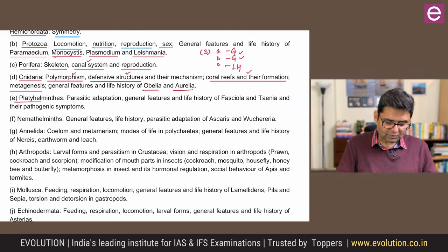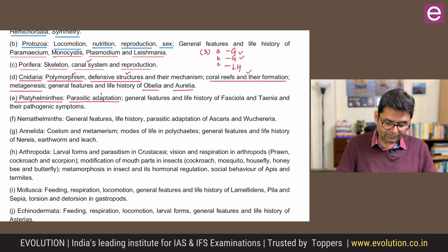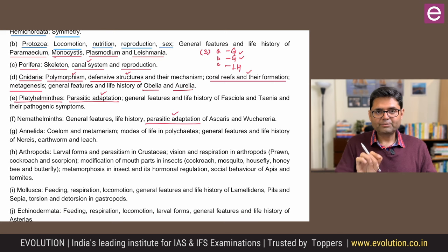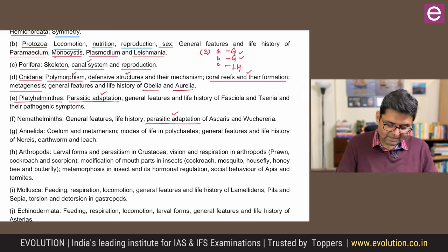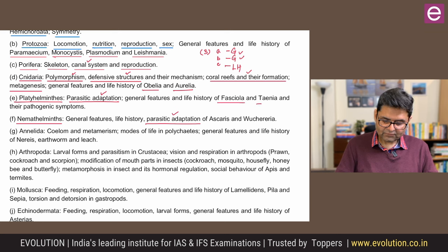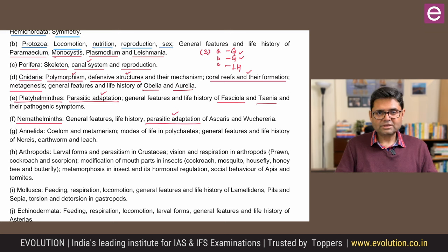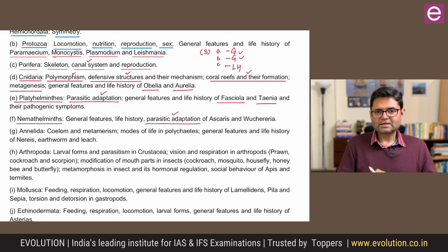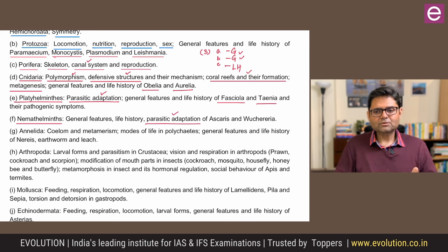Moving next, in Platyhelminthes you have parasitic adaptations — important. Similarly, parasitic adaptations in Nemathelminths. Both are pretty important. Then you have two type studies: Fasciola and Taenia — not only their general biology but in the context of infestation diseases they cause in human beings. In Nemathelminths, parasitic adaptations focus specifically on Ascaris and Wuchereria. The life histories of these phyla are also to be studied. We are now looking at 10 life cycles: four in Protozoa, two in Cnidaria, two in flatworms, and two in Nemathelminths.